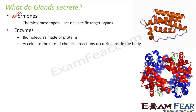Glands also secrete enzymes. Enzymes are biomolecules made of proteins that accelerate the rate of chemical reactions occurring inside the body. During digestive processes, respiration, and other life processes, many chemical reactions happen inside our body. Enzymes increase the rate of those chemical reactions, making them happen very fast. These enzymes are also secreted by glands.